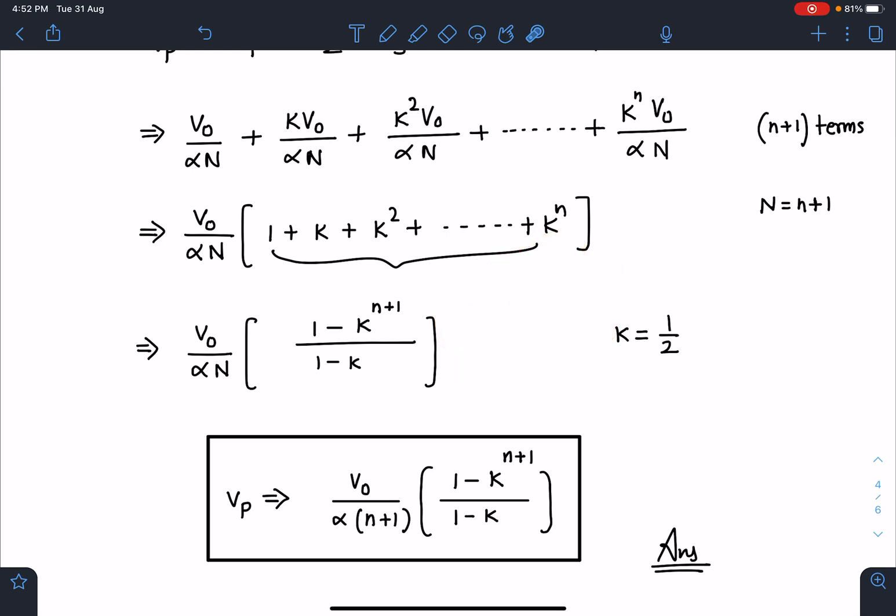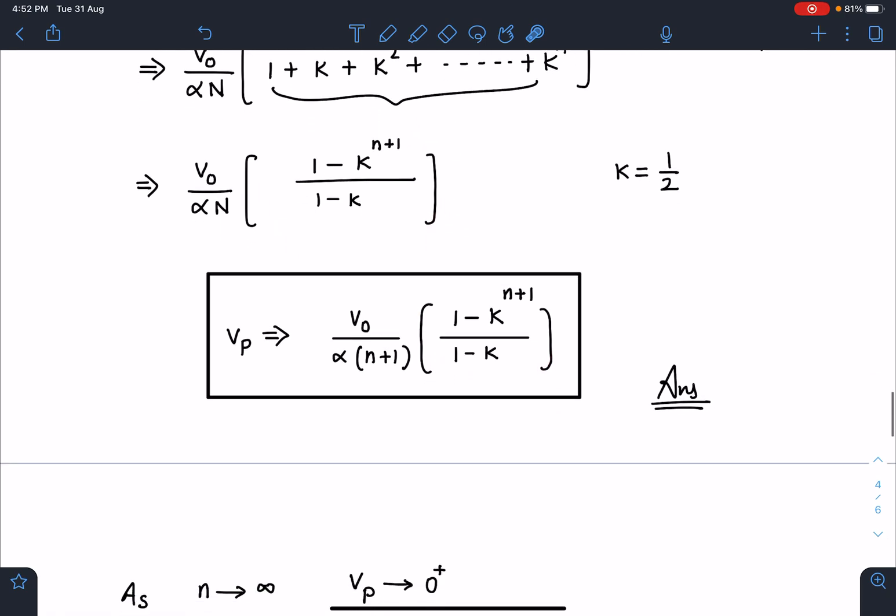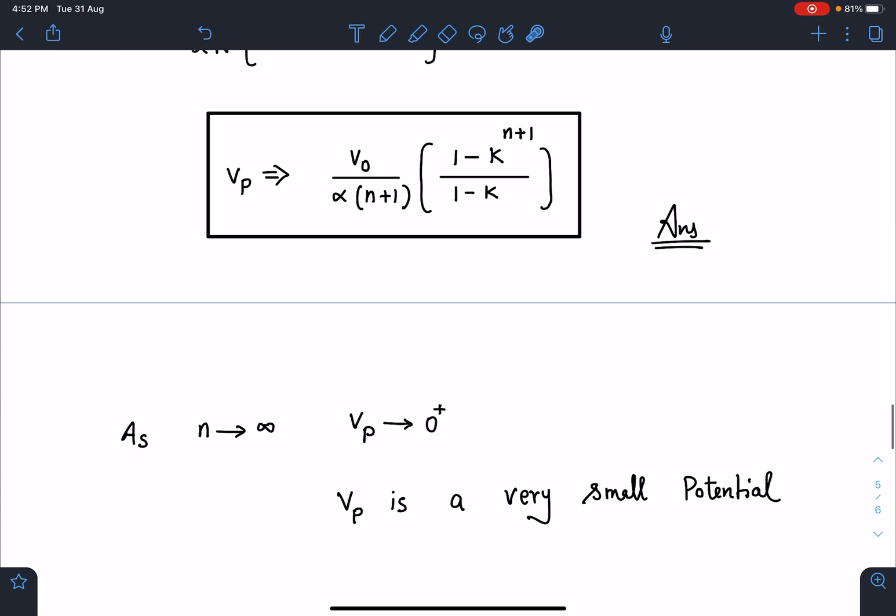This is the expression I am going to get. But here when we are going to do this for n tending to infinity, you can see here this number will be a finite number, it will go towards 2, but this factor will be very large. So overall this potential will be just greater than 0, you can say slightly above 0. Vp is a very small potential.